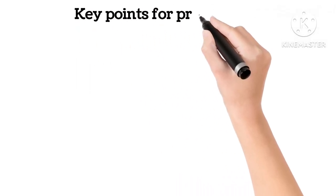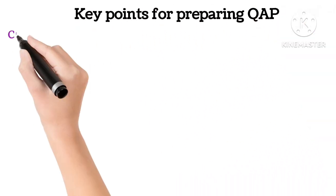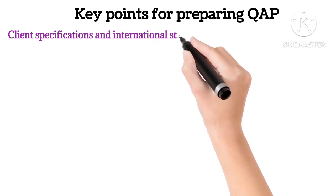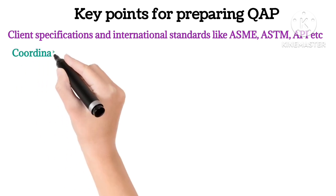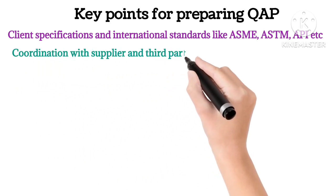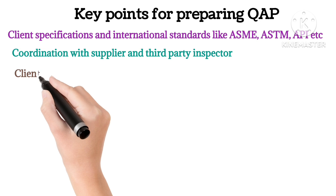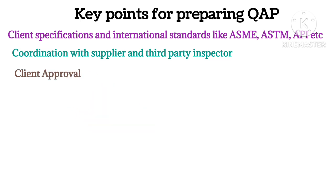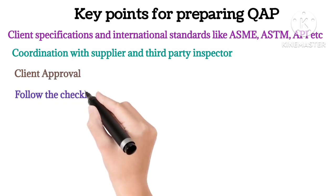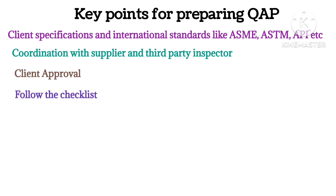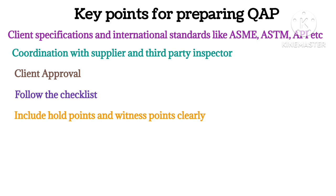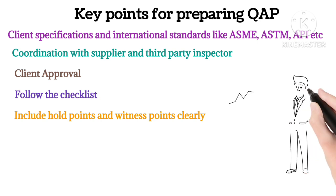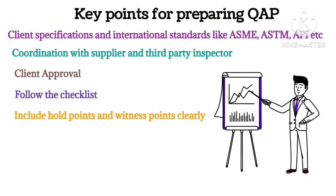Let's discuss some key points for preparing QAP and ITP. Always refer to client specifications and international codes like ASME, ASTM, API, etc. Coordinate with suppliers and third-party inspectors during document preparation. Get client approval before starting fabrication works. Use checklists to ensure completeness of the material. Include hold points and witness points clearly. Avoid copying generic templates blindly — tailor them to your actual product and process.